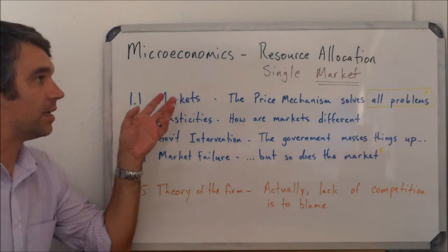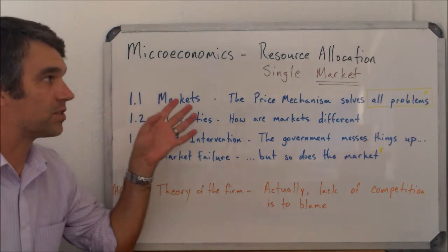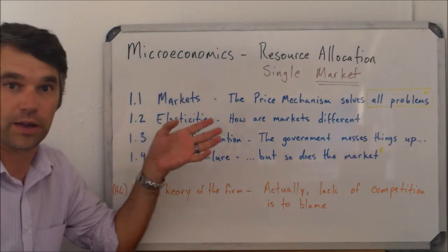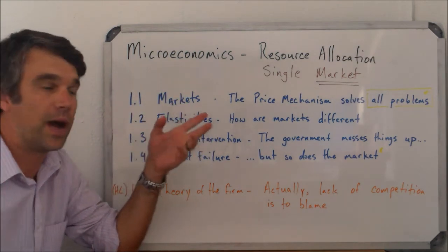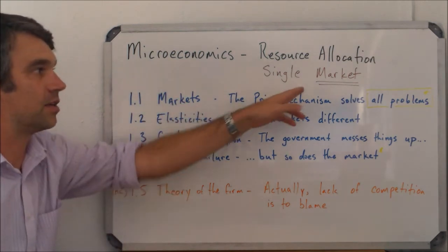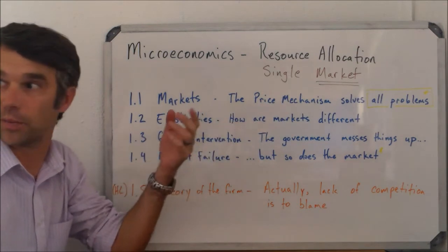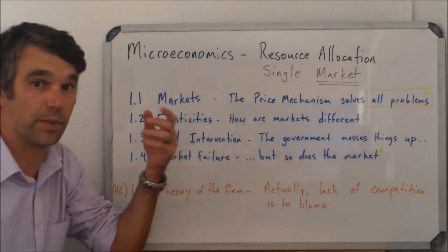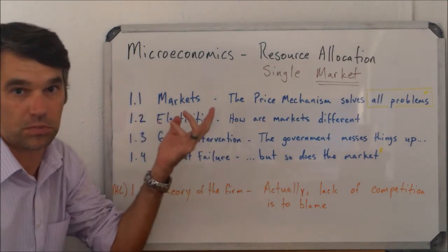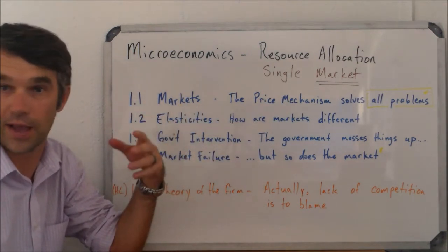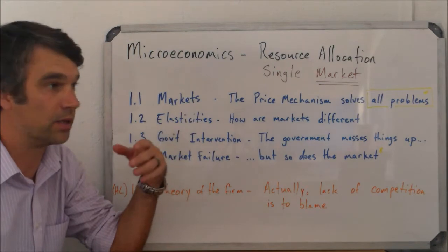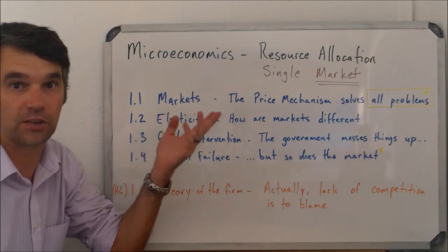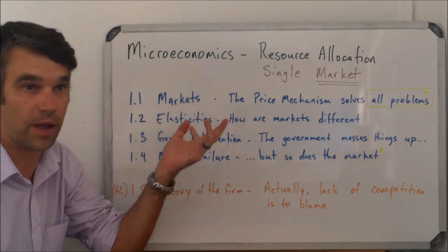In microeconomics, we study how resource allocation occurs in a single market. Keep in mind that when we say single market, we're talking about the market for one good or service — so maybe for guns, or for eggs, or automobiles, or doctors, or whatever it might be.